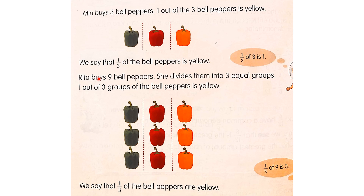Rita buys nine bell papers. She divides them into three equal groups. One out of three groups of the bell papers is yellow, so one over three is yellow. One over three multiplied by nine is equal to three. That means three of the bell papers are yellow.